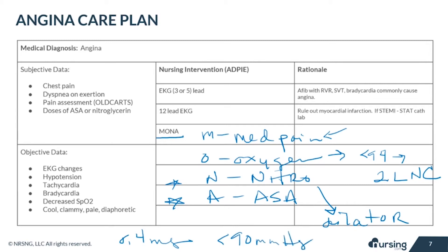Aspirin is given because it decreases mortality by thinning the patient's blood. A single dose of 325 milligrams may be given, or four baby aspirin which are 81 milligrams each can be given to total 324 milligrams.